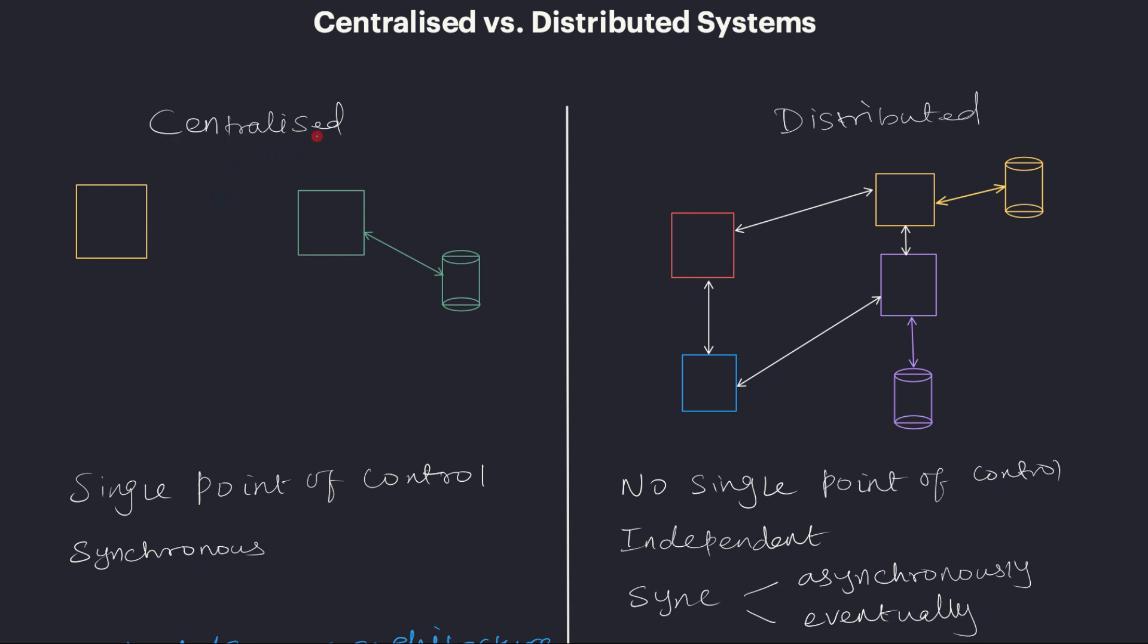The centralized system is usually a system with a single node and that single node will be the single point of control for that system. For example, if you have a website which is deployed in one web server and if that deployed website is all we need for the end-to-end functionality of that website, then we can call that system as a centralized system.